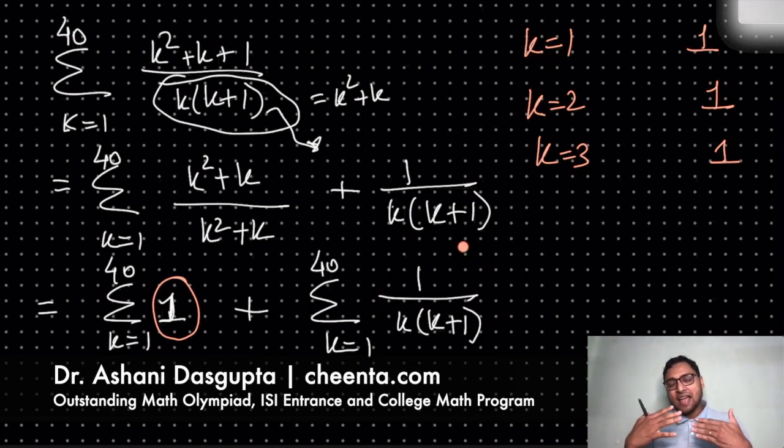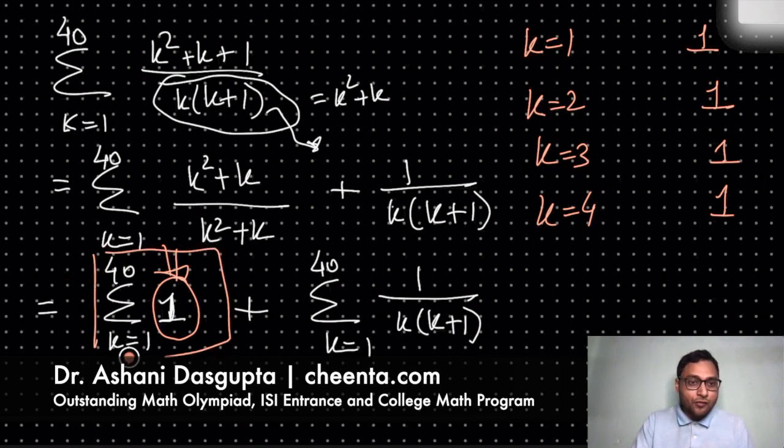That's how this summation works. Every time you have the index going one step up, whatever was inside the summation gets repeated. But you just plug in the new index. But in this particular case there is no place to plug in the new index. So you just keep whatever was there. So for k equal to 4 there is 1, and so on. So there are 40 of them there. It will go on for 40 times. So this is just 40.